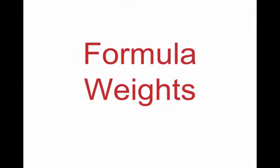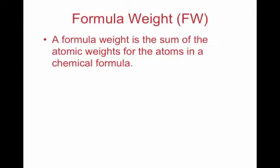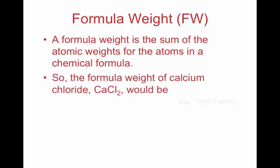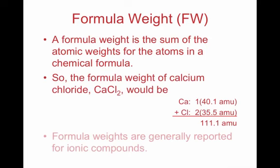First, we need to understand formula weights. A formula weight is the sum of the atomic weights — which we get from the periodic table — of the atoms in the chemical compound. For example, calcium chloride is one calcium atom bonded to two chlorine atoms. We get the molecular mass in AMUs from the periodic table.